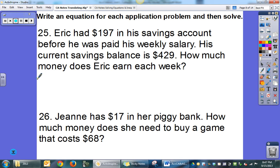Eric had $197 in his savings account before he was paid his weekly salary. His current savings is $429. How much money does Eric earn each week? Well, he started with $197. He added some amount of money, we don't know what, and now he has $429. So once I solve for X, that's going to give me his weekly amount. If I do $429 minus $197, I end up with $232.